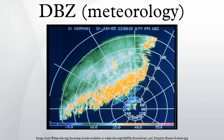The radar reflectivity of a cloud is dependent on the number and size of reflectors, which includes rain, snow, graupel, and hail.